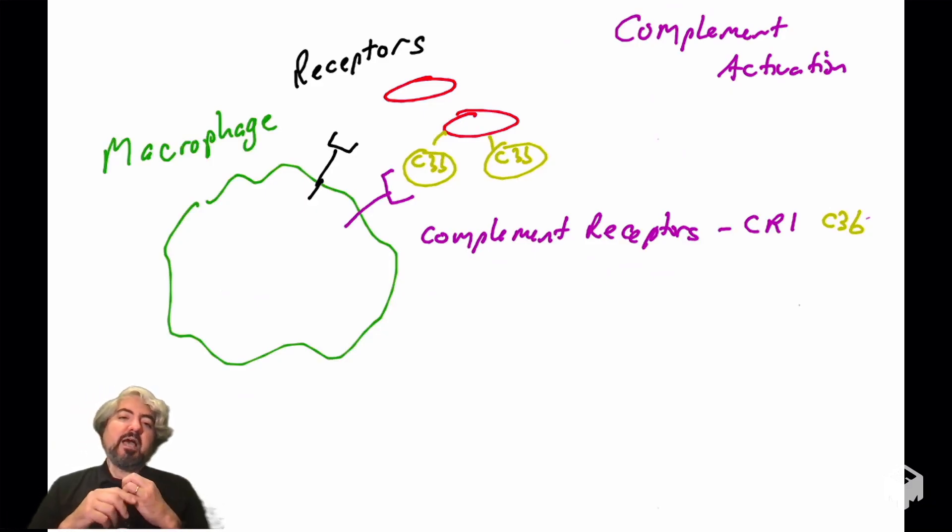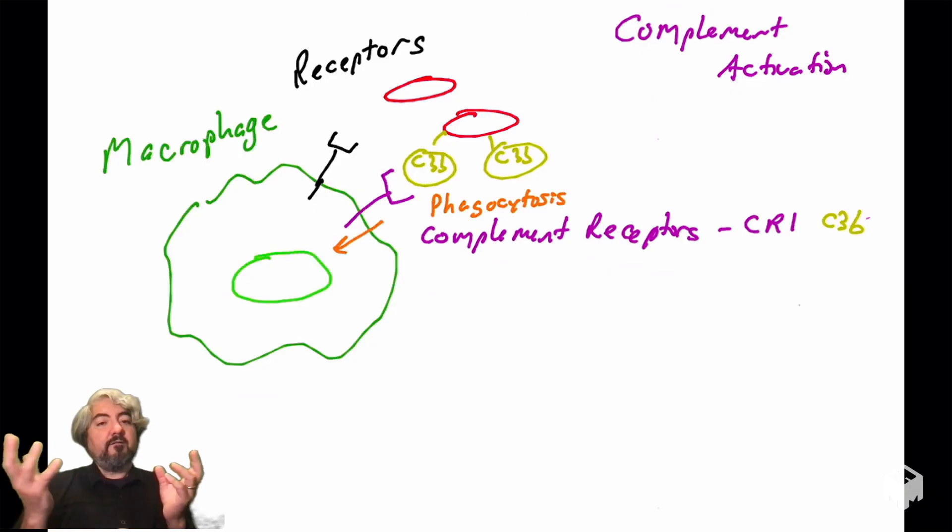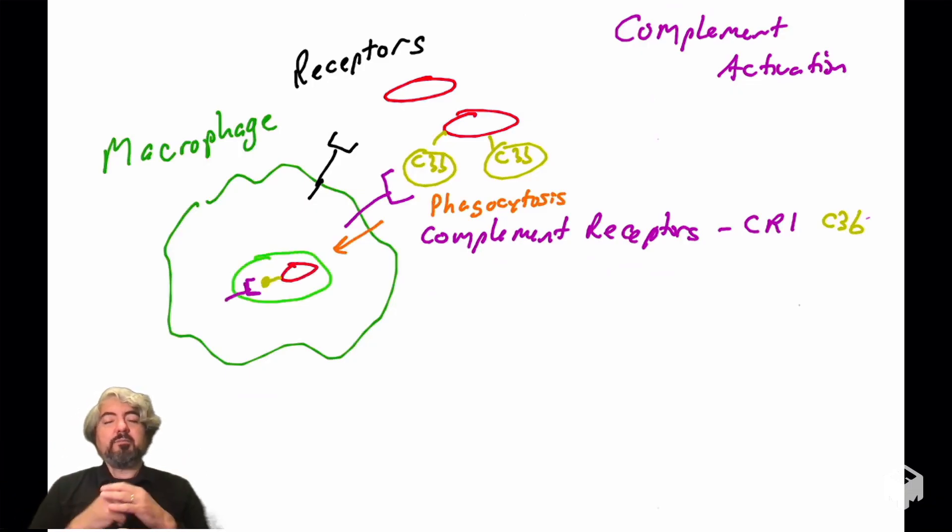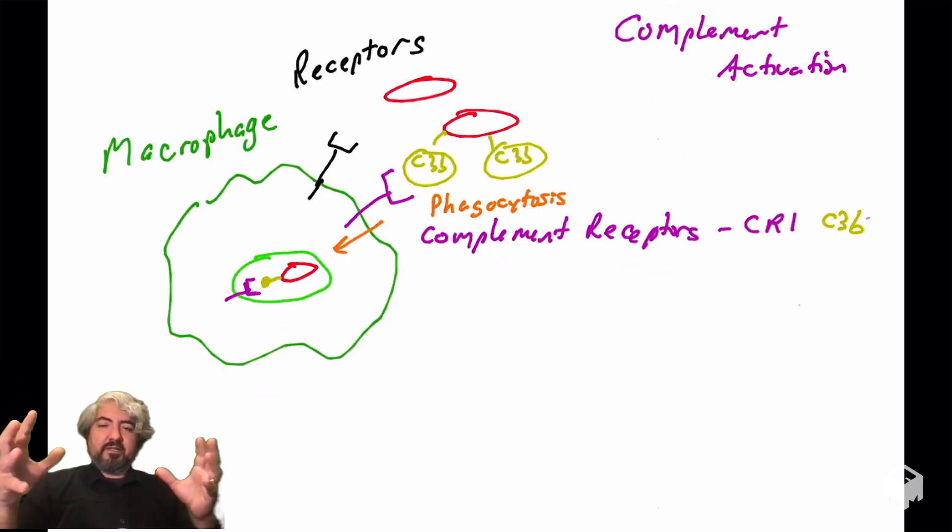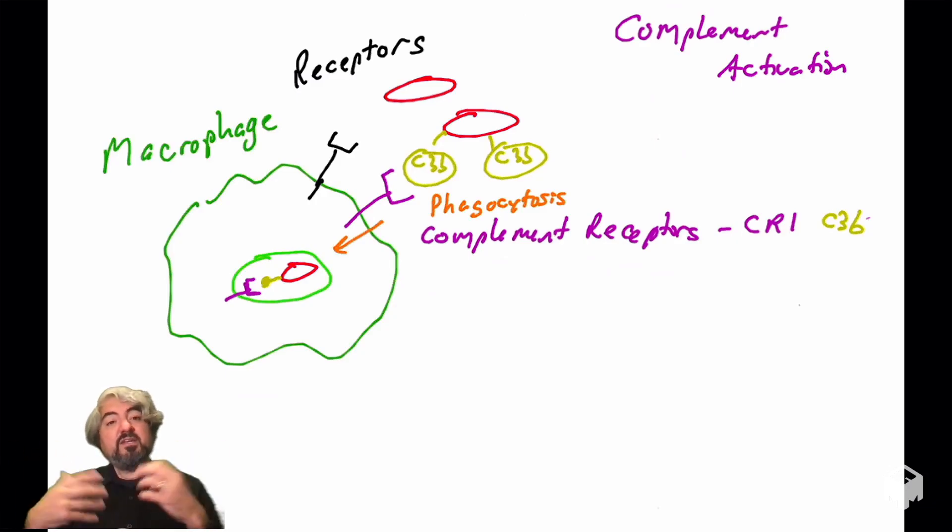In this instance here, I've drawn the complement receptor CR1, complement receptor 1. Receptors bind ligands. The ligand for CR1 is C3B. Where is C3B found? Fixed on the surface of pathogens. When CR1 binds C3B, that's going to trigger phagocytosis. This is the process by which a vesicle envelops the substance and brings it into the cell, into the vesicular system. It's a type of endocytosis.